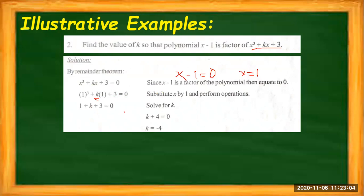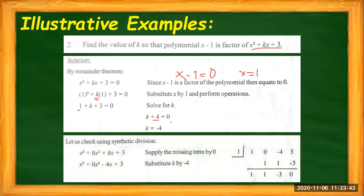After substituting, we evaluate: 1³ = 1, and 1 times K = K, plus 3, equals 0. Combining like terms: 1 plus 3 gives positive 4, so K + 4 = 0. The value of K is equal to negative 4. This means that for X minus 1 to be a factor of the given polynomial function, the value of K must be negative 4. We can use synthetic division to prove that with K = −4, the remainder is 0, confirming that a binomial is a factor of the polynomial when the remainder is 0.